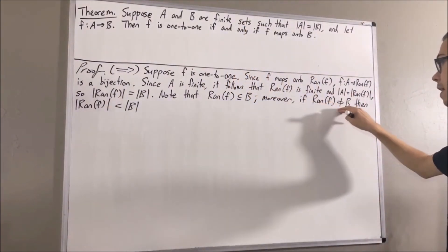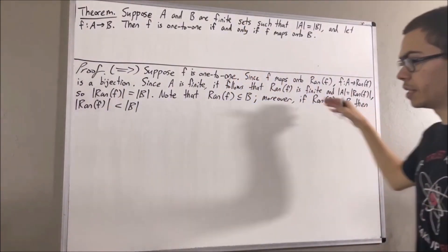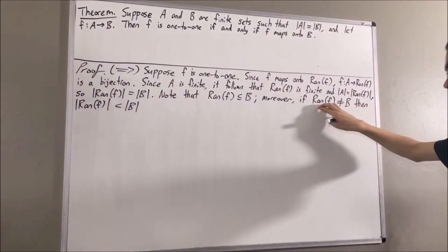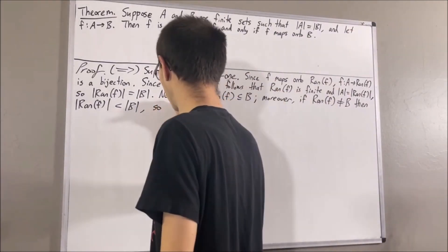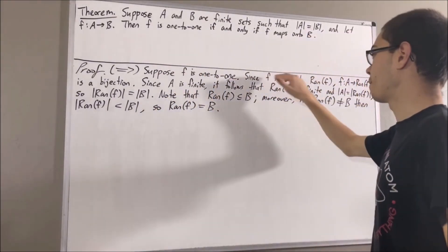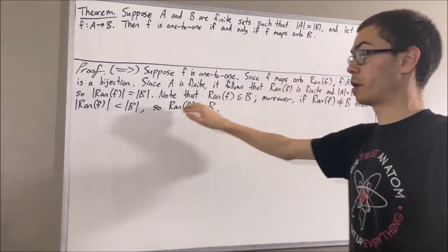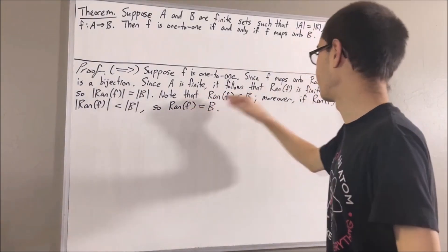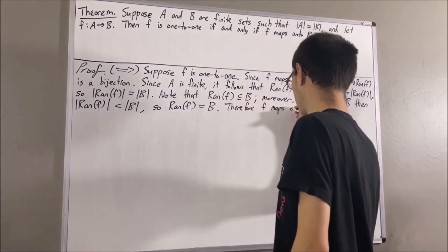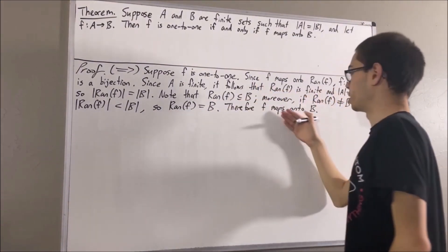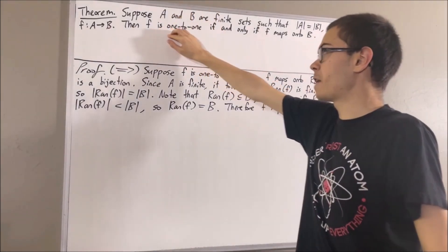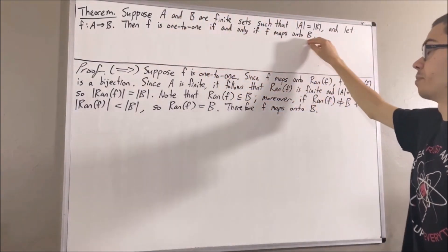But that is false because we know that the range of F and B have equal cardinalities. So assuming that the range of F is not equal to B leads us to a contradiction. Therefore, we must have that the range of F is equal to B. Since F maps onto the range of F and the range of F equals B, this tells us that F maps onto B, which is exactly what we wanted to show. This proves: if F is one-to-one, then F maps onto B.